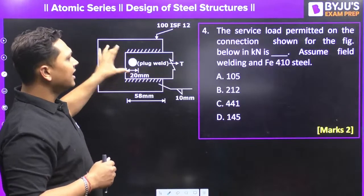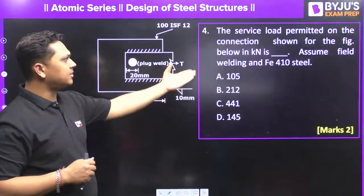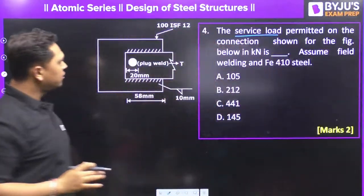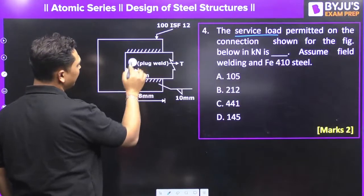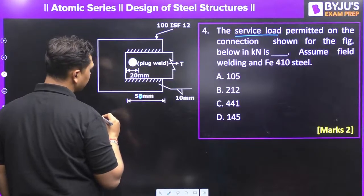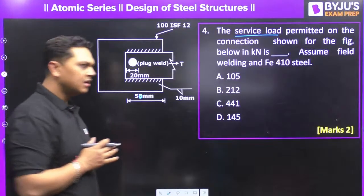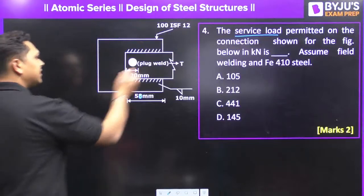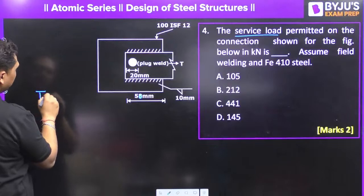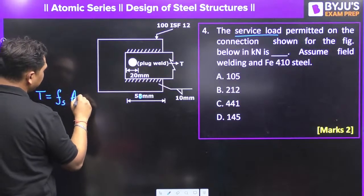Next question: a service load is permitted on a connection as shown in the figure, assuming field welding and Fe410 steel. You are asked to find the maximum service load that can be applied. Welds are given at the top and bottom, and a plug weld with diameter 20 mm is also given, with dimensions of 50 mm. The total force is the shear strength of the weld multiplied by the effective area.